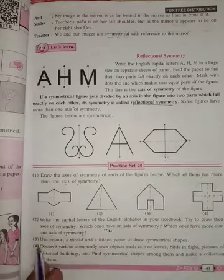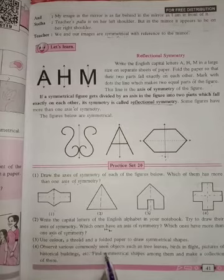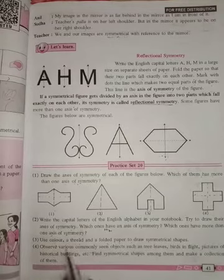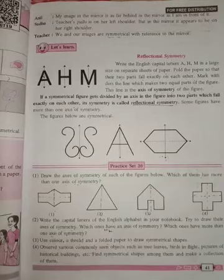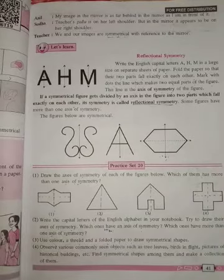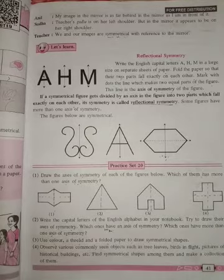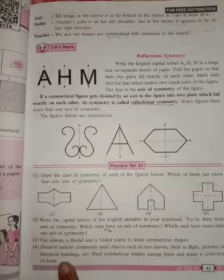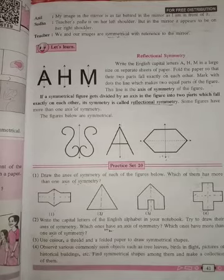Number 4: observe various commonly seen objects such as trees, leaves, birds in flight, pictures of historical buildings, and images. Find symmetrical shapes among them and make a collection of them.